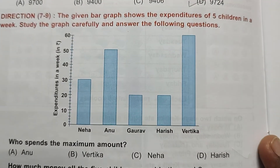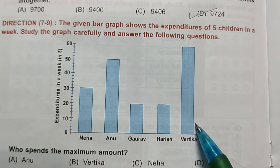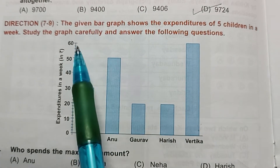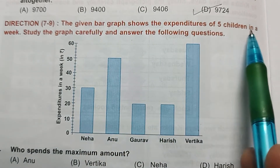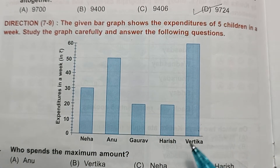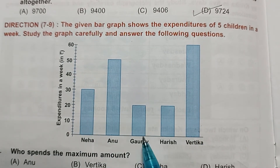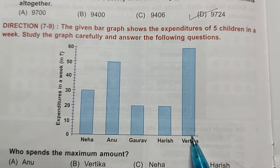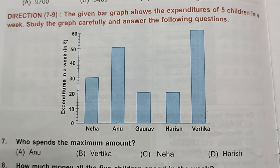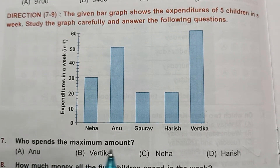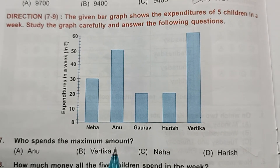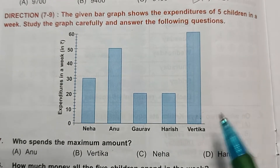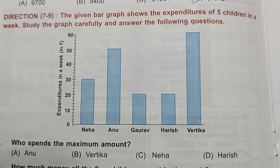Now the next bar graph is for questions 7 to 9. The bar graph shows the expenditure of five children in a week — Neha, Anu, Gaurav, Harish, and Vartika. Question 7: Who spends the maximum amount? The child with the tallest bar is Vartika, so she spent the most money. Option B is the answer.